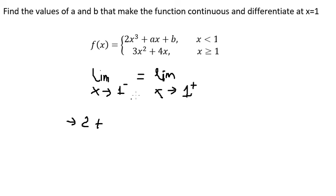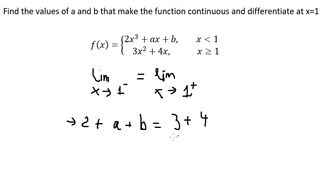On the right side, putting x equals one into the middle piece gives a plus b. Putting x equals one into the other piece gives 3 plus 4, which is 7. So our first equation is: a plus b equals 7 minus 2, which equals 5.